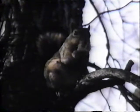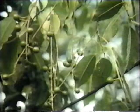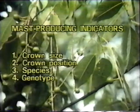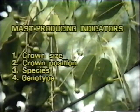Let's talk now about applying the crop tree management concept to benefit wildlife by increasing production of mast from individual trees. Notice the difference in degree of flowering between two white oaks — the tree with denser flowers may produce more acorns. Important mast-producing indicators are size of crown relative to DBH, crown position, species, and genotype.